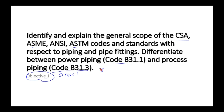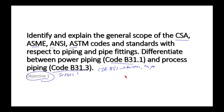The CSA is a Canadian code — specifically, it's the B51, which covers boilers, pressure vessels, and pressure piping. Because CSA is a Canadian code, it supersedes all other codes and standards that are referenced, including the ASME. But it references many codes, including the ASME Boiler and Pressure Vessel Code.